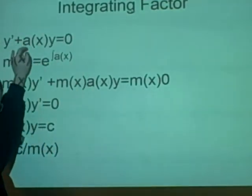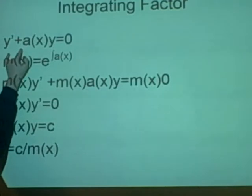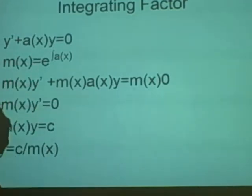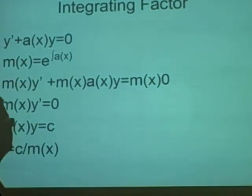So, you're given an equation which is a linear equation. We have y prime which is dy/dx plus a(x)y equals zero. Now a(x) is just a function of x times y.